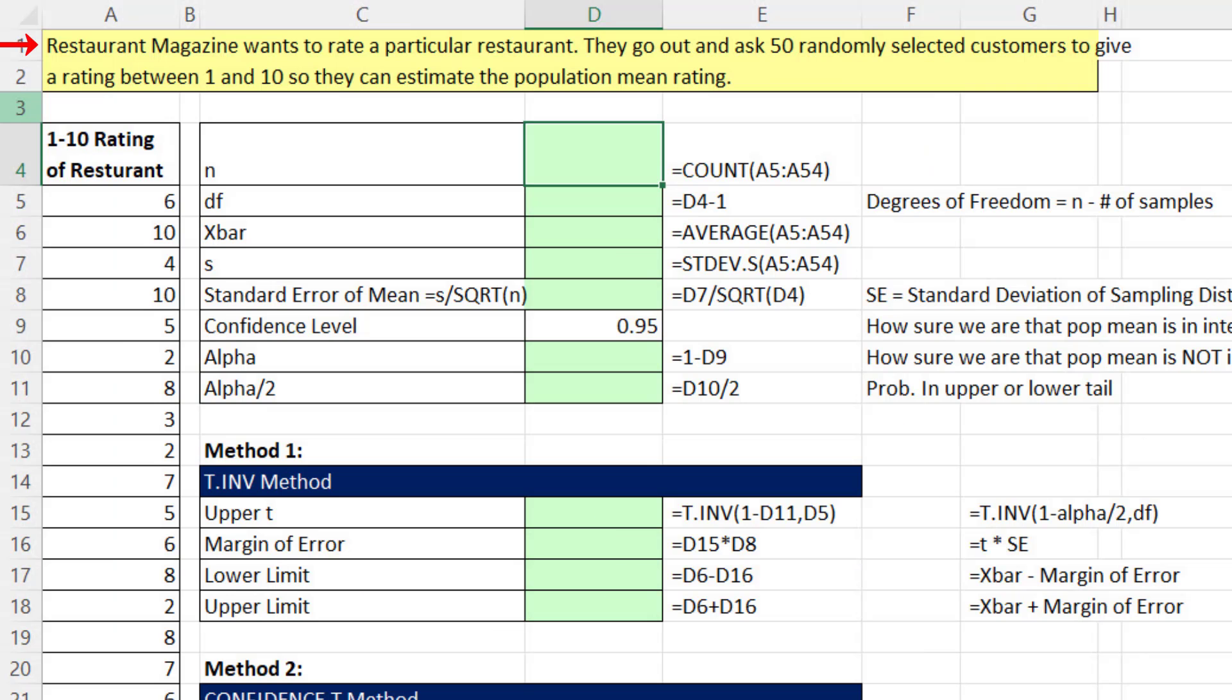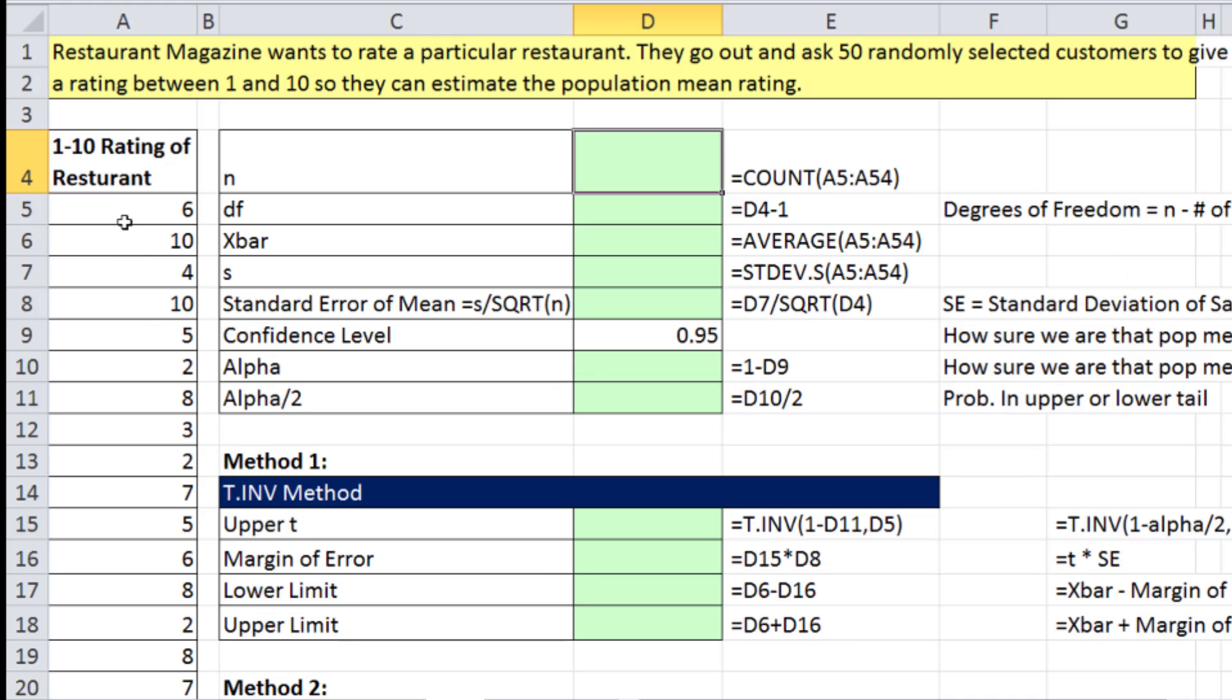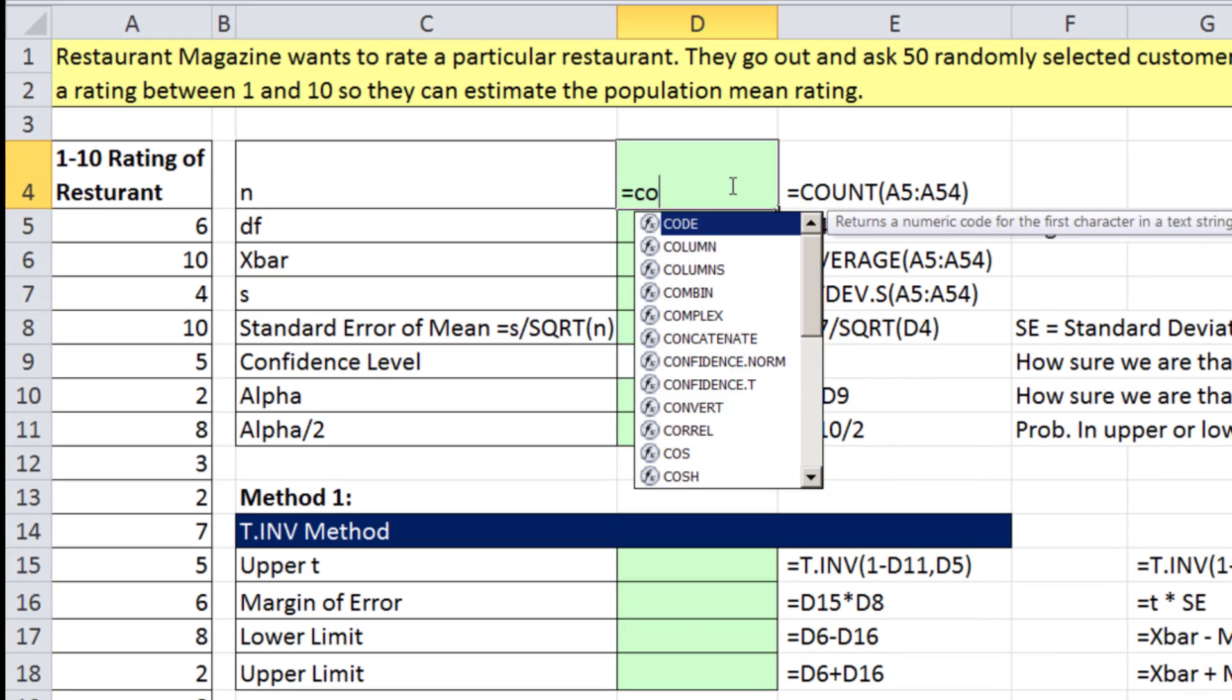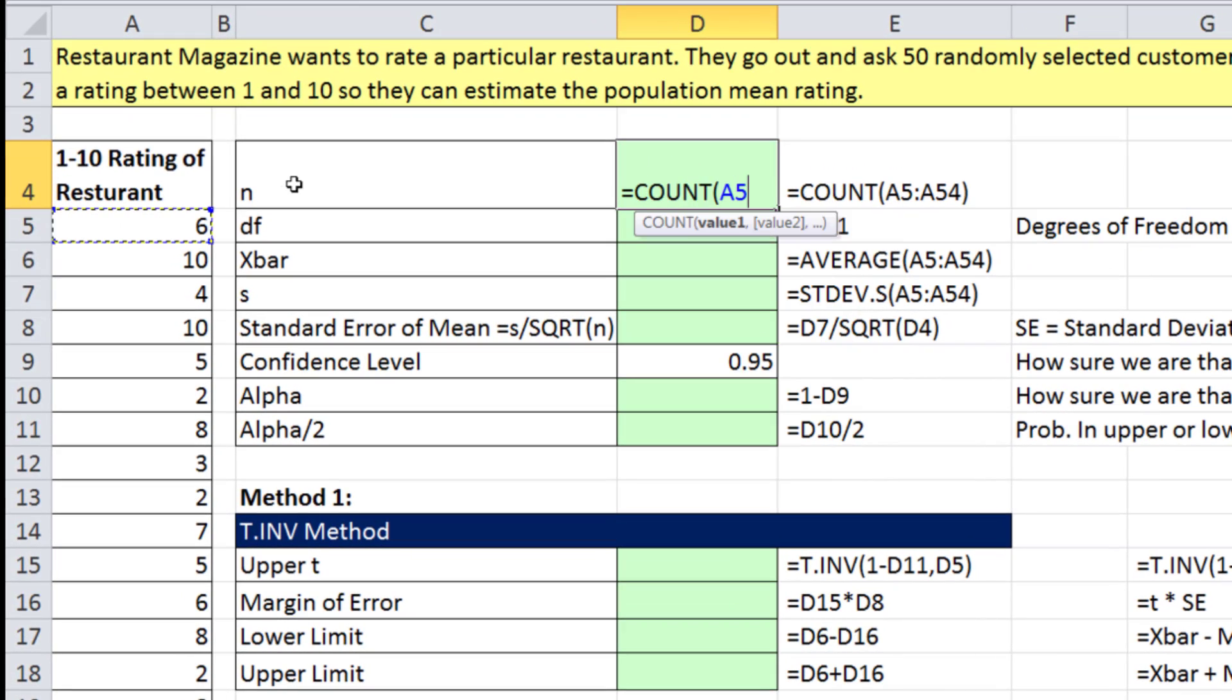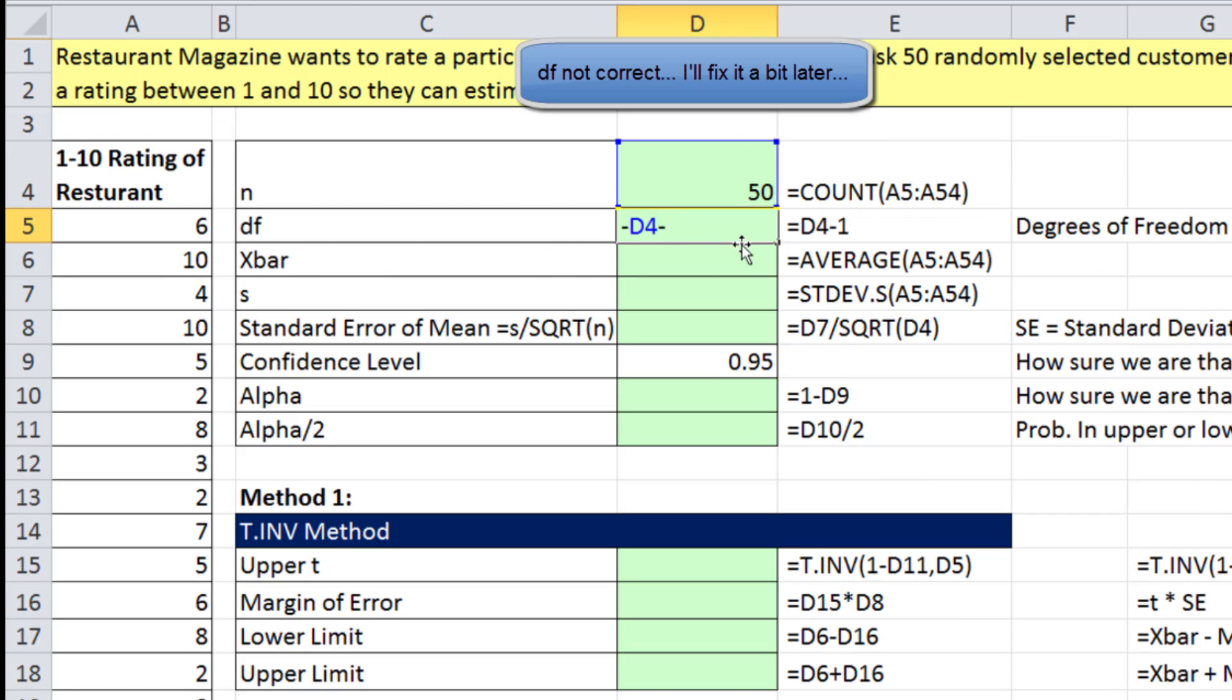Here's another example. A restaurant magazine wants to rate a particular restaurant. They go out and ask 50 randomly selected customers to give a rating between 1 and 10 so they can estimate the population mean rating. So here's our data set here. We have n equals 50. Let's go ahead and count that.